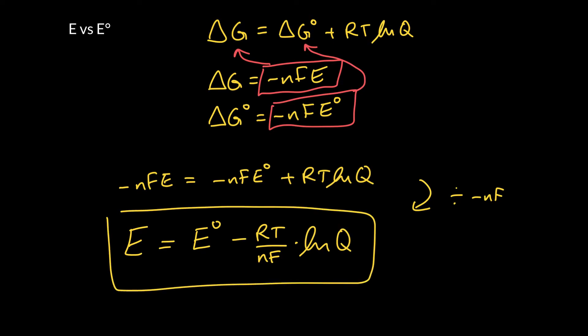So that allows us to convert between the actual cell voltage under current conditions and the standard cell voltage under standard conditions. And this equation here is commonly known as the Nernst equation, after a very famous physiologist called Walter Nernst.